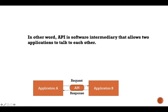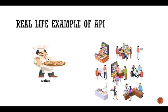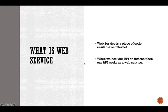In this way, API helps Application A and B to communicate with each other. In a real-life example, we can say a waiter works as an API. When a customer comes into a restaurant, the waiter takes the request from the customer and passes this request to the kitchen. The waiter then collects all the prepared food as per the request and sends this response back to the customer. So here the waiter is taking a request, sending it to the target system — the kitchen — taking the response from there and sending it back to the customer. In this way, the waiter is working as an API.